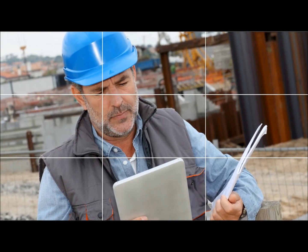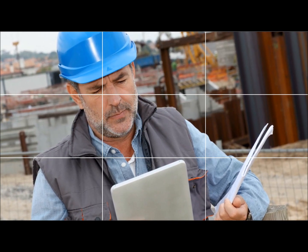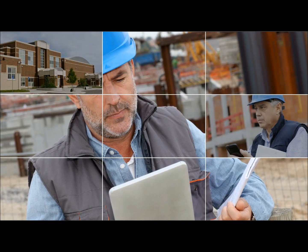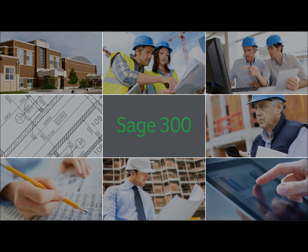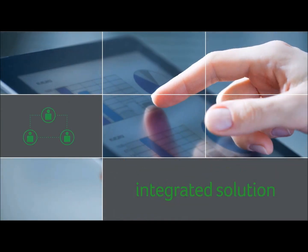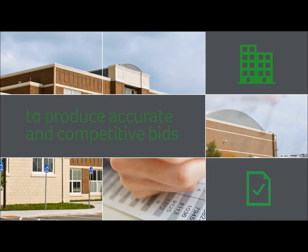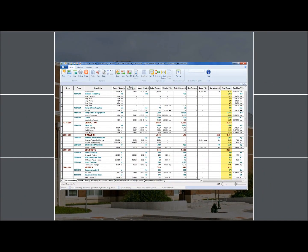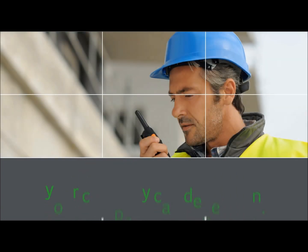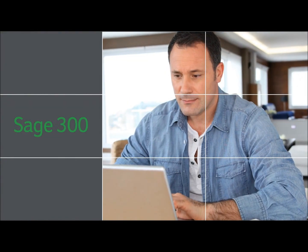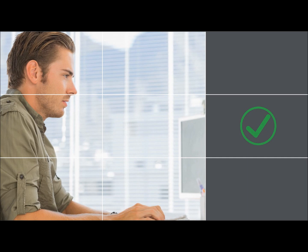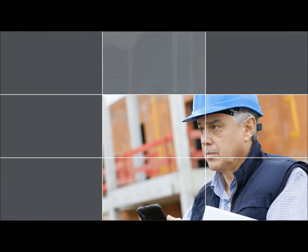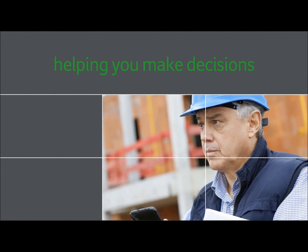To effectively manage your operations you need broad visibility and quick access to project details. With constant change, keeping projects on schedule and within budget requires you to keep everyone connected and moving forward. Sage 300 Construction and Real Estate simplifies how you work by offering an integrated end-to-end solution to take your team from the initial estimate through project completion. Sage Estimating gives your estimators the tools they need to produce accurate competitive bids your company can depend on. Once you've won the job, those details become the foundation for your job cost budgets and purchasing in Sage 300.